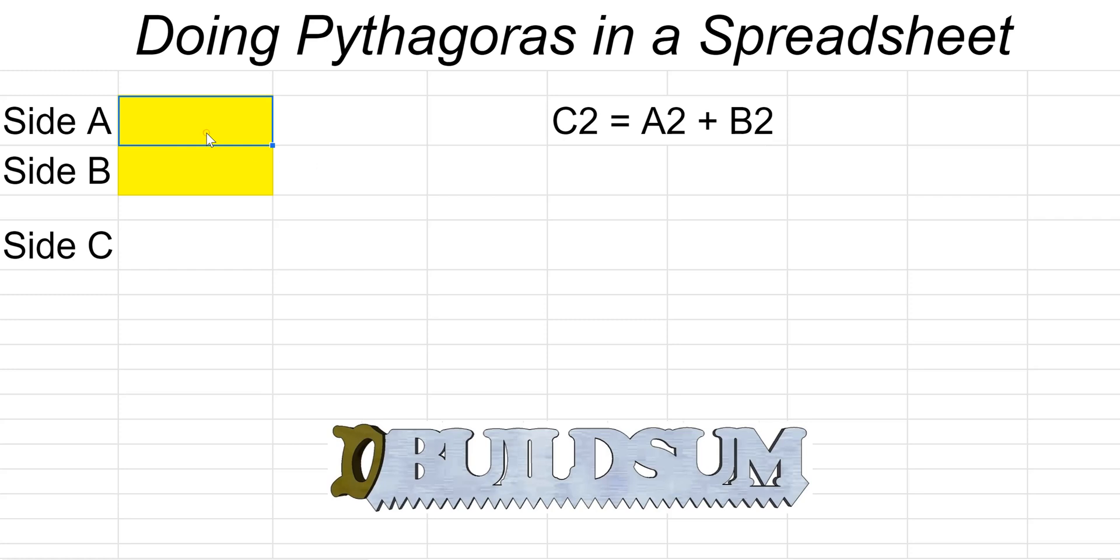As I always do with my formulas, I'm going to start with two figures that I know are going to give me the right answer. So if you know about a 3, 4, 5 triangle: if you have a triangle with one side that's 3 metres and one side that's 4 metres, you're always going to have a hypotenuse of 5. So I know that's going to work, so I'll start with that.